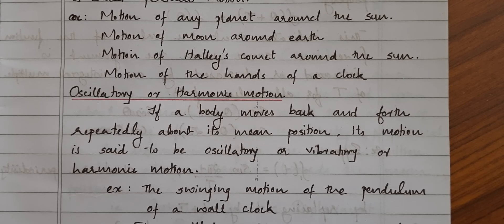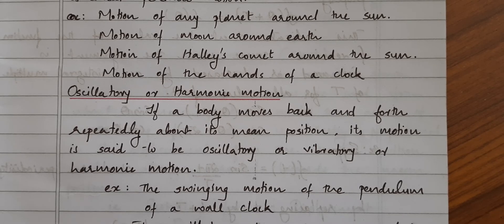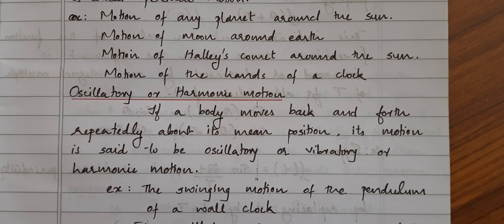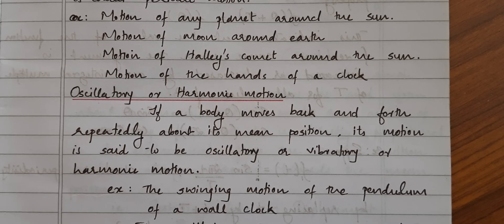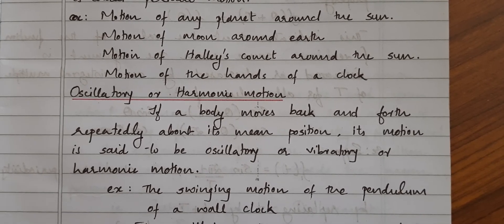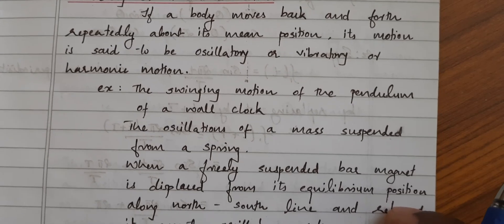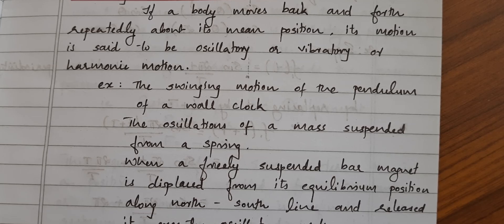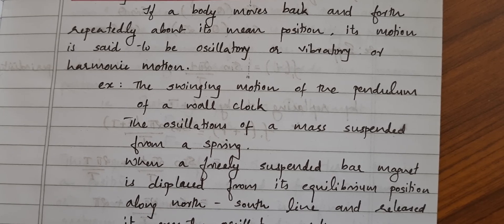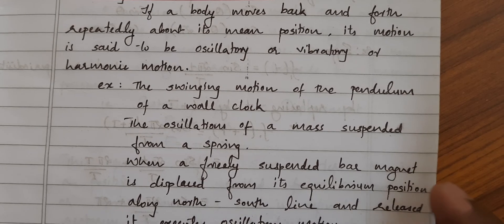A wall clock — inside a wall clock you might have seen a pendulum. In that older type pendulum clock, the pendulum undergoes oscillatory motion. A spring suspended with a mass will execute oscillatory motion when disturbed. Even a freely suspended bar magnet — if you tie it with a small thread at the middle, hang it somewhere, and disturb it — it will go in a to-and-fro motion, and finally settle to the north-south direction. These are examples of oscillatory motion.